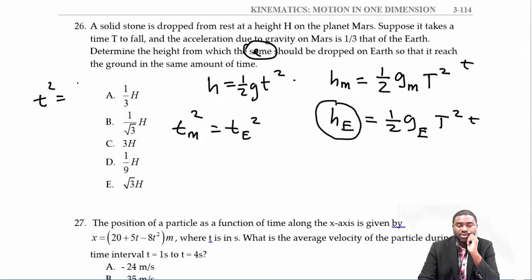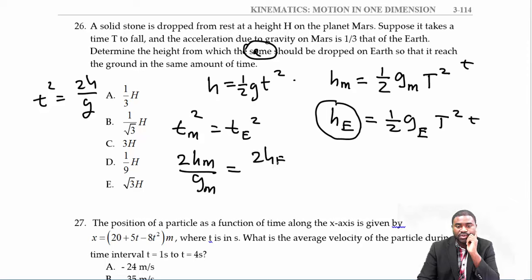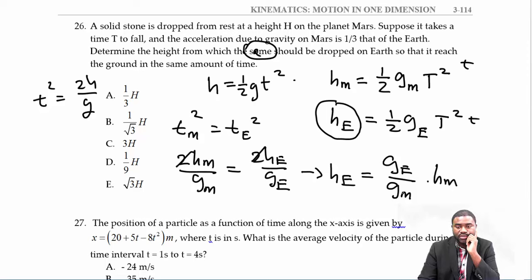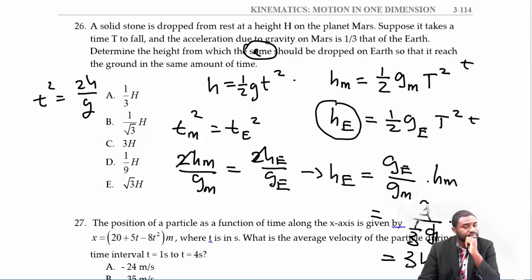Since t² = 2h/g, we have 2h_M/g_M = 2h_E/g_E. The 2's cancel, giving h_E = (g_E / g_M) × h_M. We know the gravitational field of Mars is one-third that of Earth, so h_E = g / (⅓g) × h = 3h. The g's cancel and the 3 comes up, giving 3h.